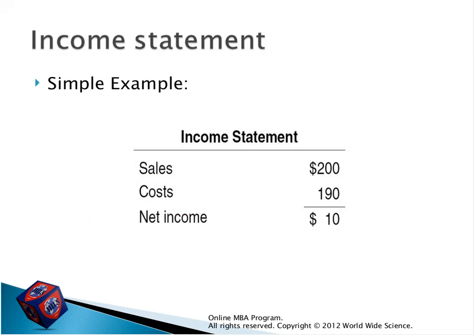A simple example: if the company has revenue of 200 and cost of expenses of 190, the net income equals 10 US dollars. The company got a net income of 10 US dollars. But we can also get a loss — if expenses are more than sales, like if costs were 220 instead of 190, we would get a negative figure shown as a loss.